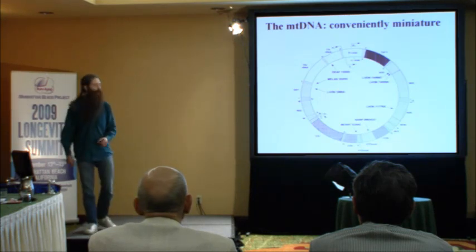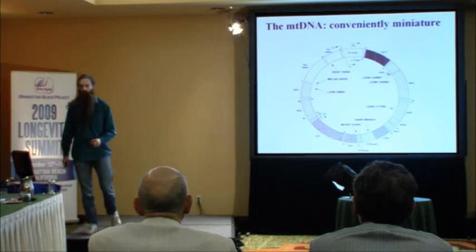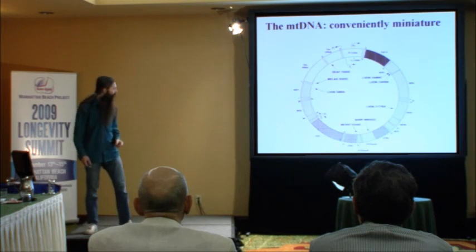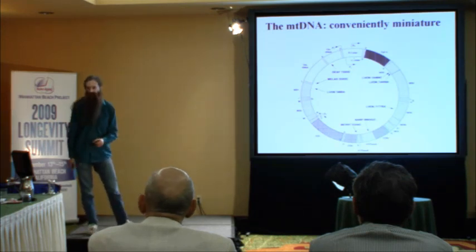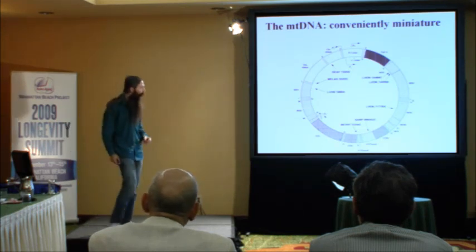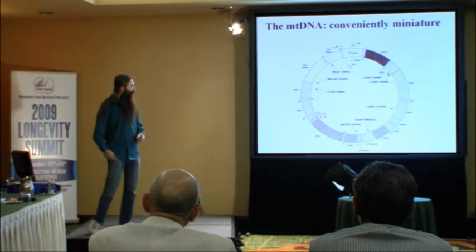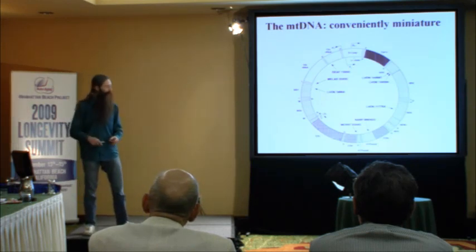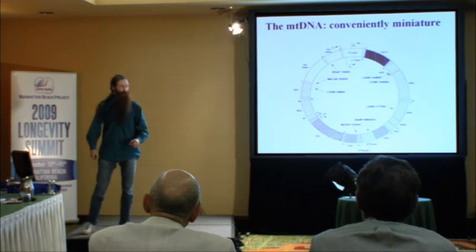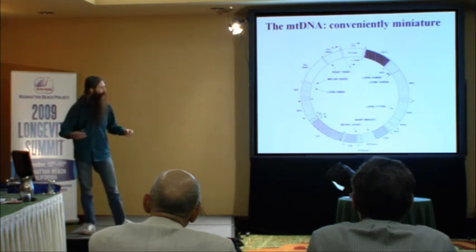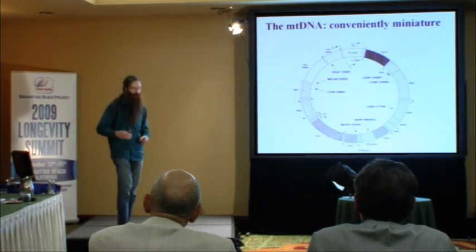Each of those mitochondria has one or more — usually a few — of these: a circular chunk of DNA, only 16,500 base pairs long, that encodes 13 proteins. There are also a bunch of genes that encode RNAs involved in the construction of those proteins, but nothing else — just those proteins.